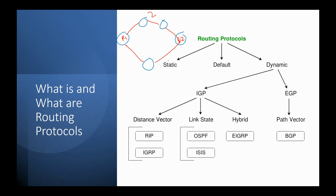RIP has two versions: version 1 and version 2. RIP's metric is hop count — the number of hops between routers. For example, if R1 needs to reach R2 and there are two possible paths — one with two hops and one with one hop — RIP will choose the path with fewer hops as the best route.